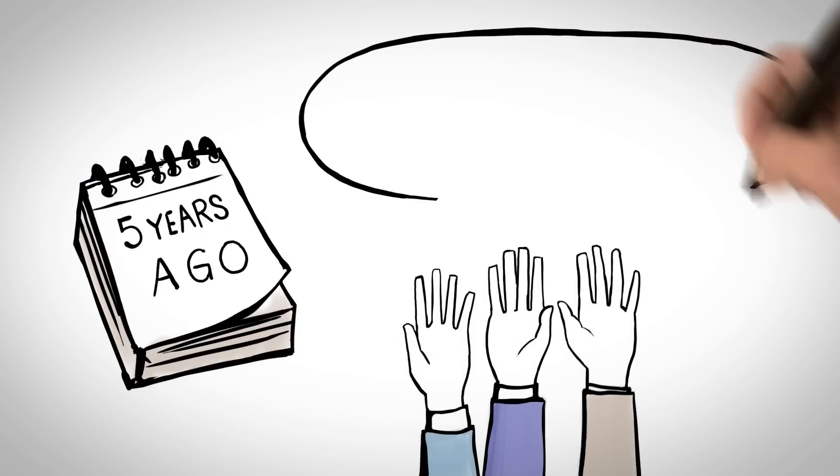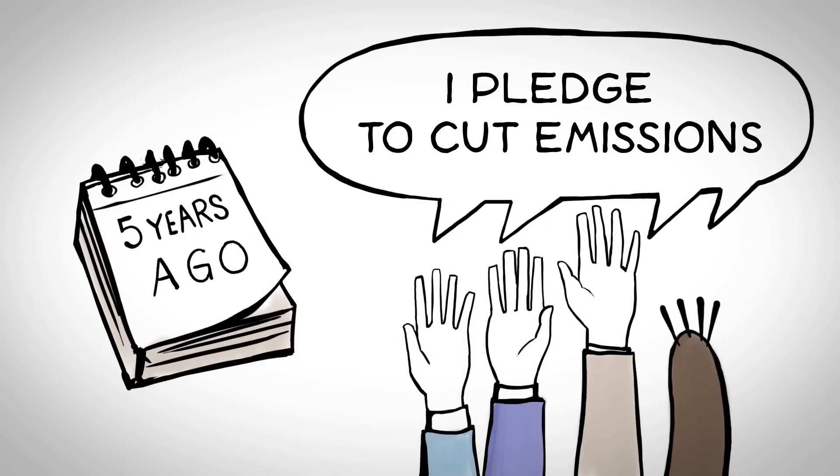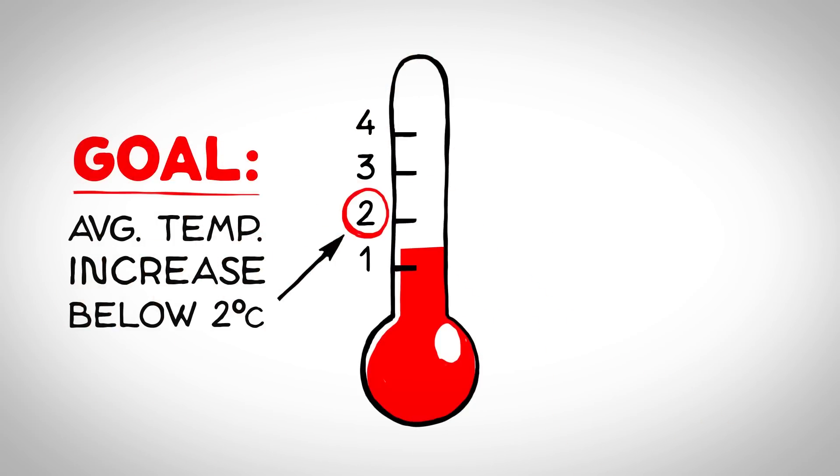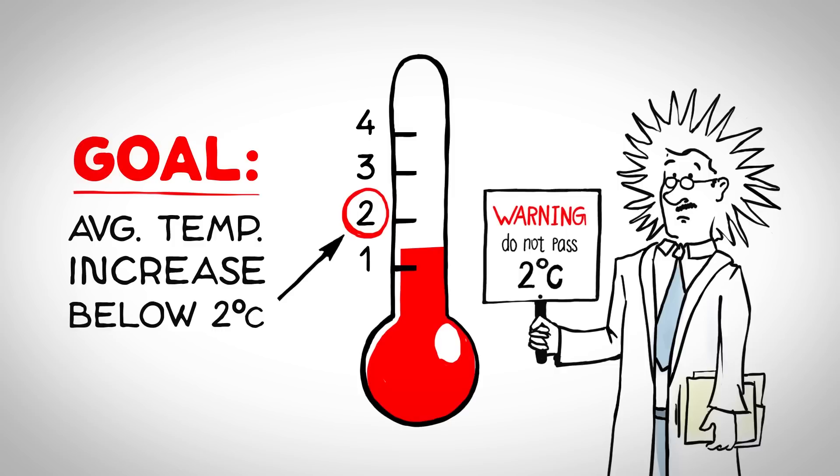Five years ago, world governments pledged to cut carbon emissions in order to keep the average global temperature increase below 2 degrees Celsius. That's what's needed to limit the worst effects of climate change, according to the best science.